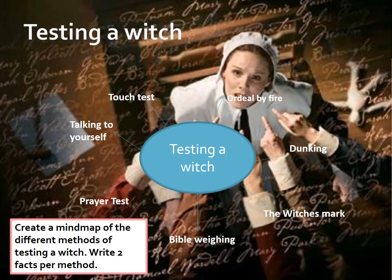Now, testing a witch. There are different types of tests that were carried out to see if a person was a witch or not. In your jotter, or on a Word document, put 'Testing a Witch' in the middle and around it write down these points: touch test, talking to yourself, prayer test, Bible weighing, the witch's mark, dunking, and ordeal by fire. For each method on your mind map, you're looking to write down two facts.